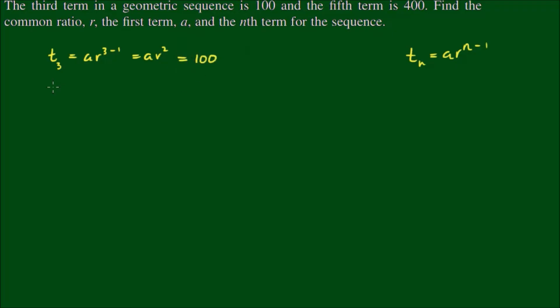We've got similarly t sub 5 equals ar to the power of 4, since 5 minus 1 equals 4, which equals 400.